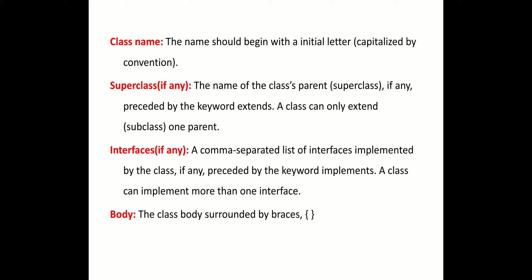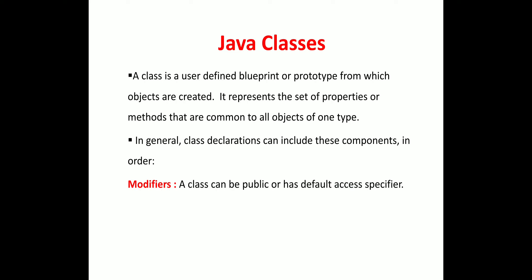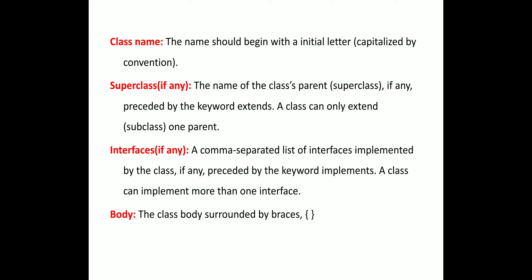Finally, a class consists of a body surrounded by opening and closing braces. These five components — modifier, class name, super class, interface, and body — are the components of a Java class. In your exam, the question may ask: what are the components of a Java class? You can write these five points.